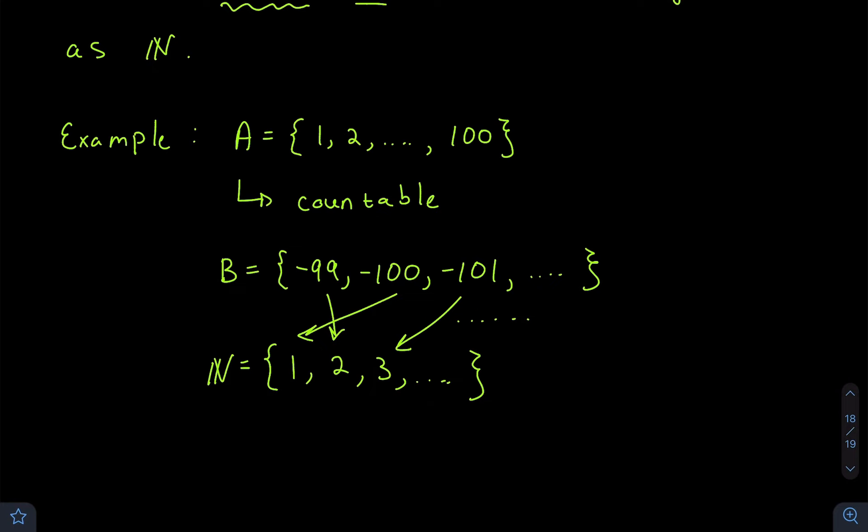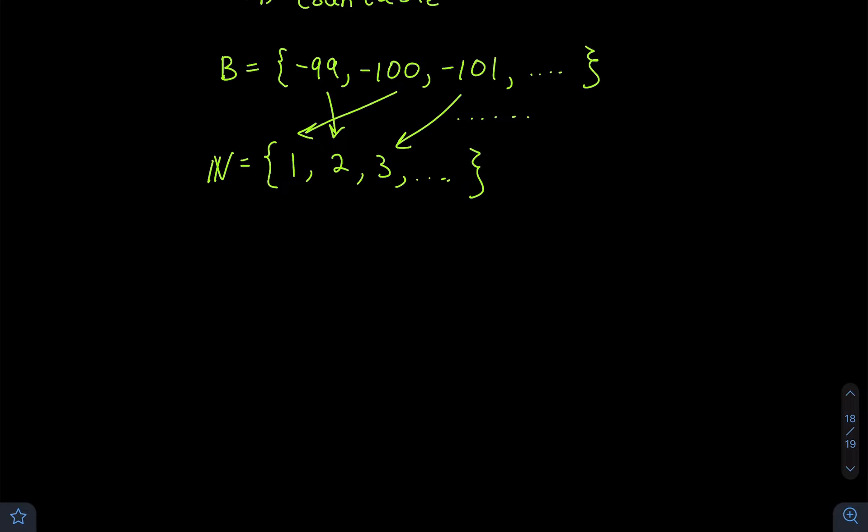Now even though set B is infinite, it still happens to be countable because of this property. A set that's not countable, for example, will be set D, which will be the interval from 0 to 1.